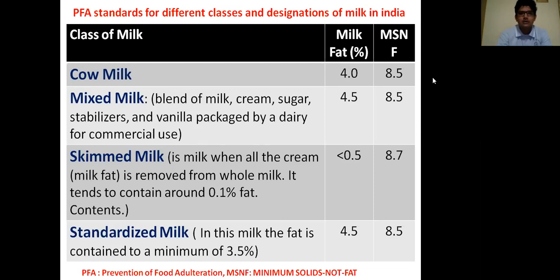The next class of milk is skim milk. Skim milk is milk from which all the cream — that is, the milk fat — has been removed from whole milk. It tends to contain around 0.1% fat content. The milk fat in skim milk is less than 0.5% and MSNF is 8.5%.